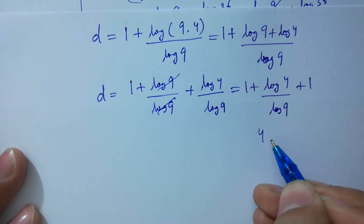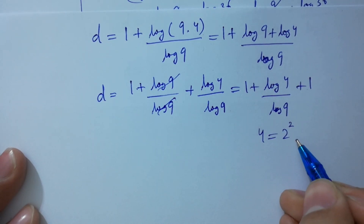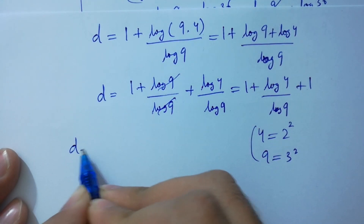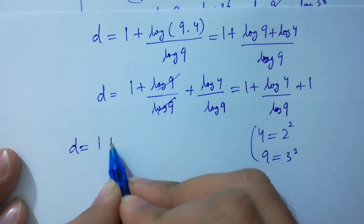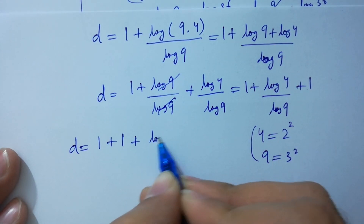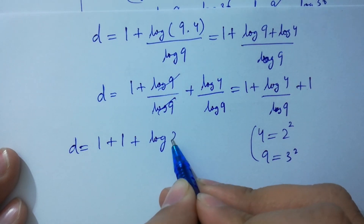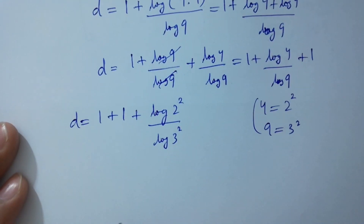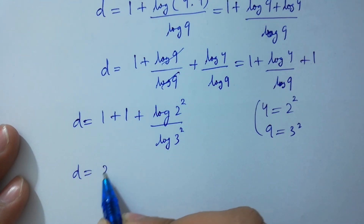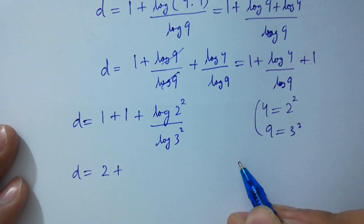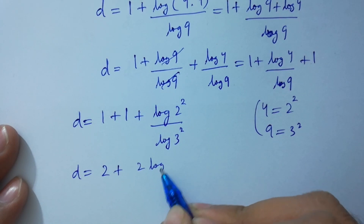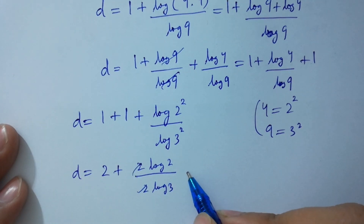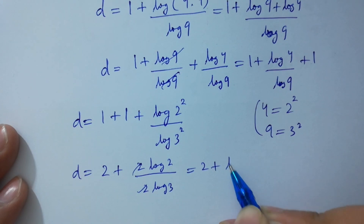Since 4 equals 2 squared and 9 equals 3 squared, d equals 1 plus log(2 squared) over log(3 squared), which is 1 plus 2 log 2 over 2 log 3. The 2s cancel, giving d equal to 2 plus log 2 over log 3.